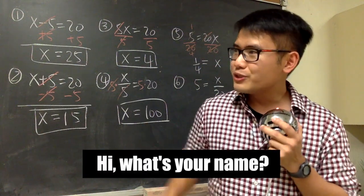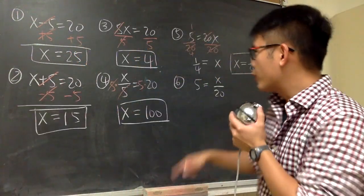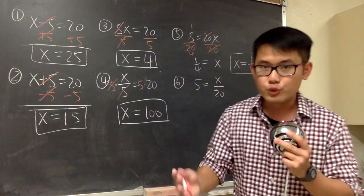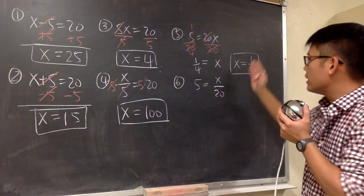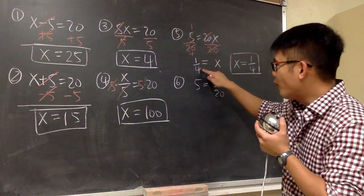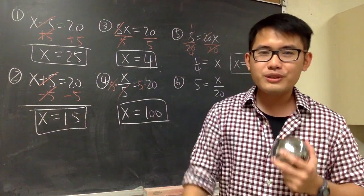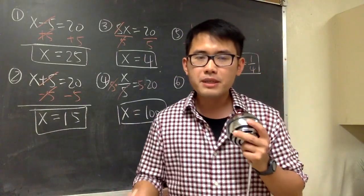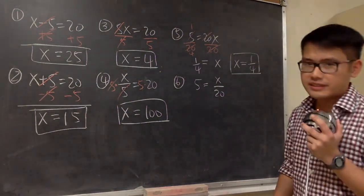Think of it this way: if someone asks your name, you reply 'My name is Mr. Chow,' not 'Mr. Chow is my name' — that sounds weird. Similarly, the question asks for the value of x, so we should write x is equal to 1 over 4, reading left to right. It's not wrong to write 1 over 4 equals x, but it sounds weird. So that's another reason why we should have x on the left-hand side.